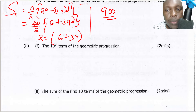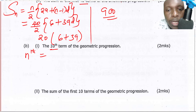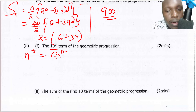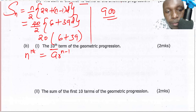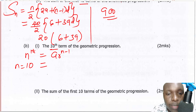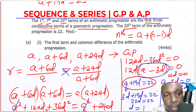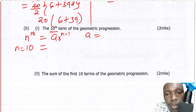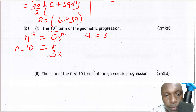Now for the tenth term of the geometric progression. The nth term of a GP is given by A × R^(N−1), where A is the first term, R is the common ratio, and N is the position. For the GP, the first term A is 3. To find the common ratio, we compute (A + 6D) divided by A, which is (3 + 6) divided by 3 = 9/3 = 3. So the common ratio R equals 3.